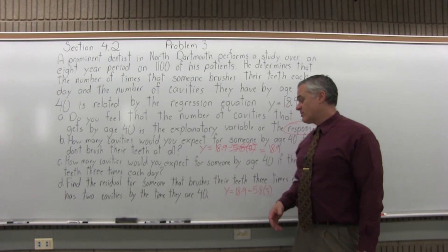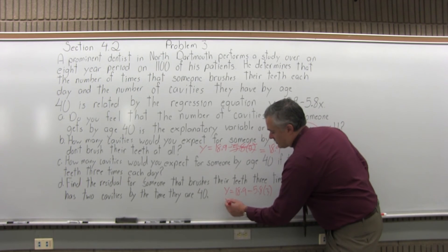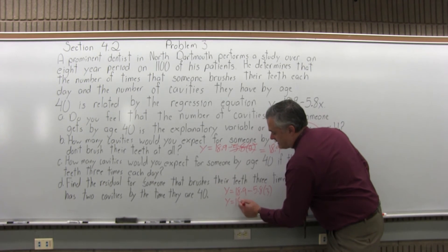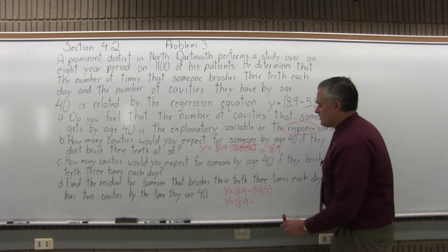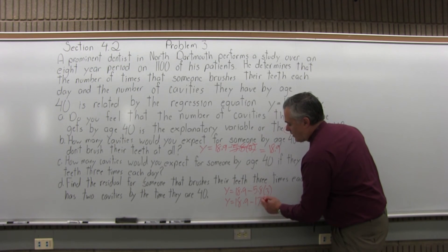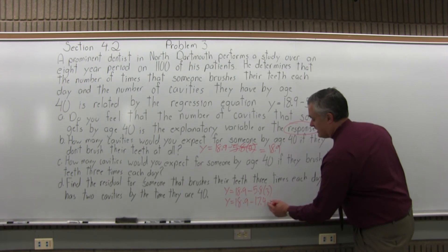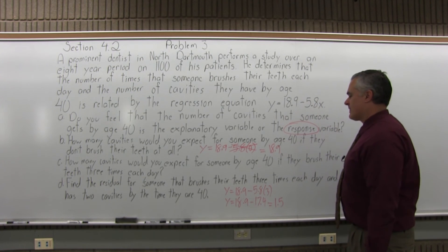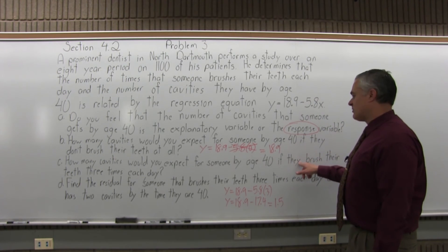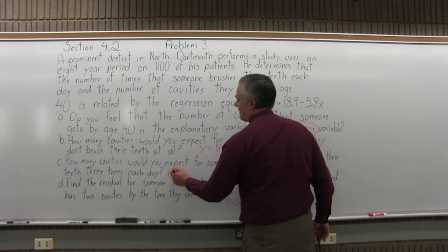You have multiplication and subtraction to do, so you must follow the correct order of operations — do the multiplication first. That gives us y equals 18.9 minus 17.4, because 5.8 times three equals 17.4. Subtracting 18.9 minus 17.4 gives an answer of 1.5. So if someone brushes their teeth three times each day, by the time they're 40 you can expect 1.5 cavities.